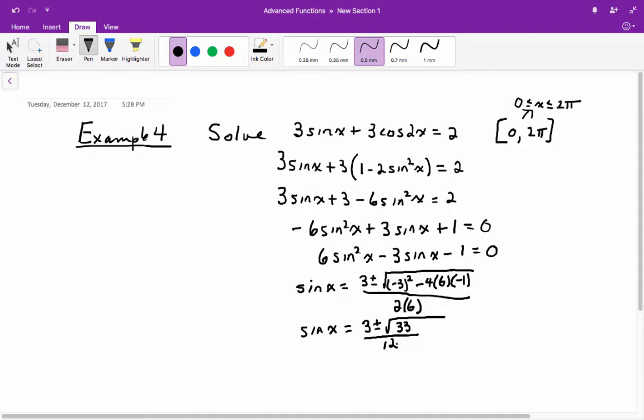So what we're going to get when we do 3 plus root 33 divided by 12, or 3 minus, we're going to get sine of x equals 0.73 or sine of x equals negative 0.28.